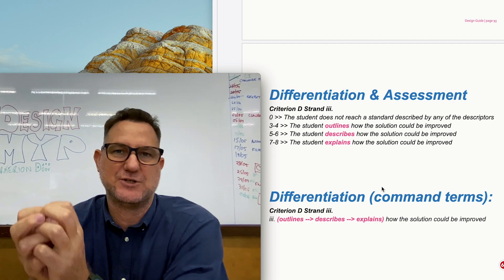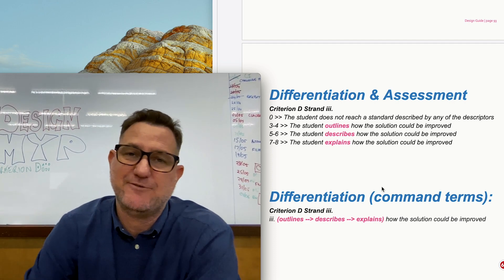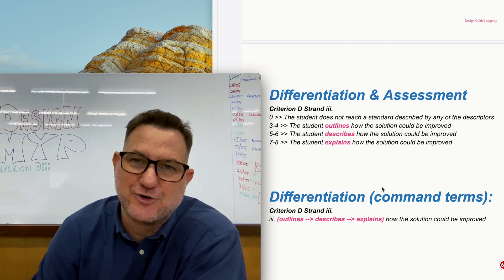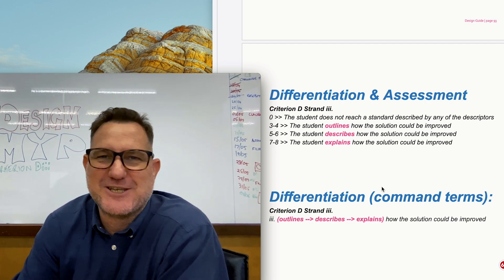You can get yourself top mark so you talk about changes to your product and changes to your plan and that's how you get a score of 8 out of 8 for strand 3 criterion D strand 3. Good luck with your summative assessment. Thank you.